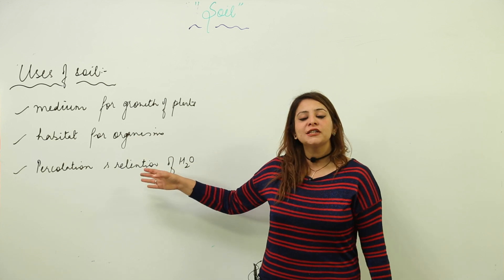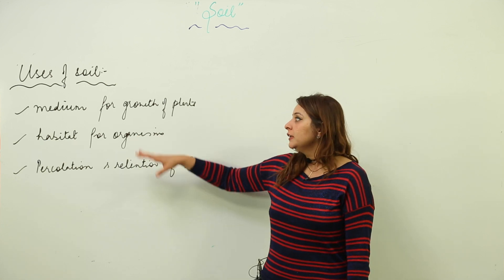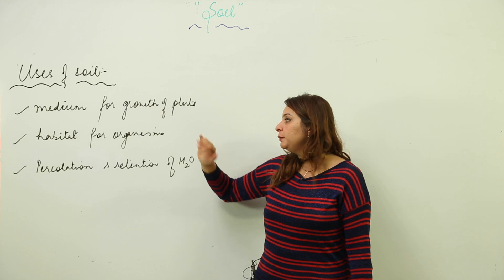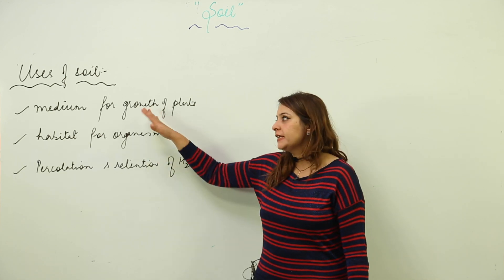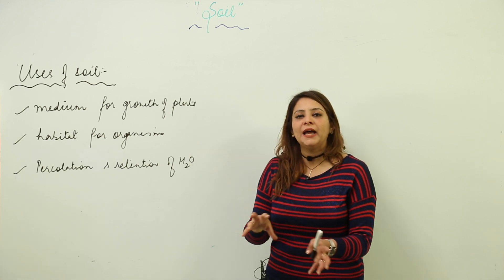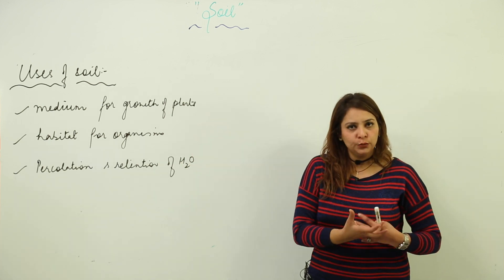So these are the three important uses the soil is performing for us: it is a medium for the growth of plants, habitat for organisms, and percolation and retention of water. As I have mentioned, you need to write a few lines under each as I have discussed with you orally.